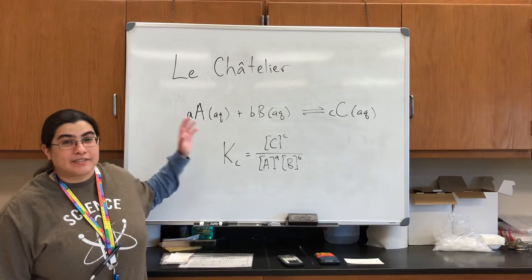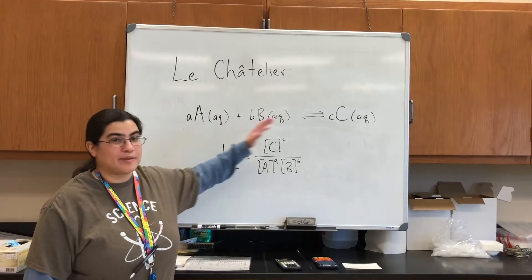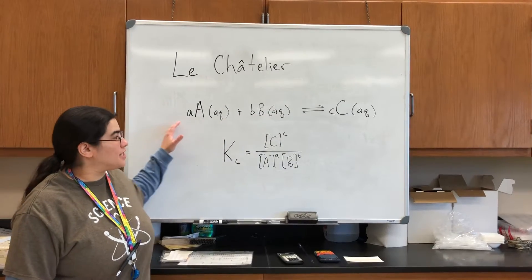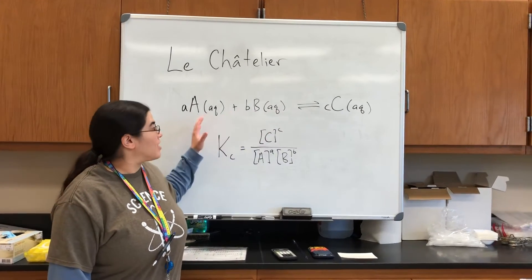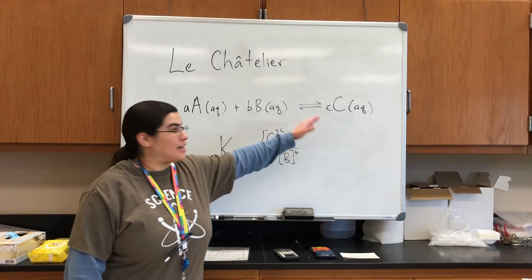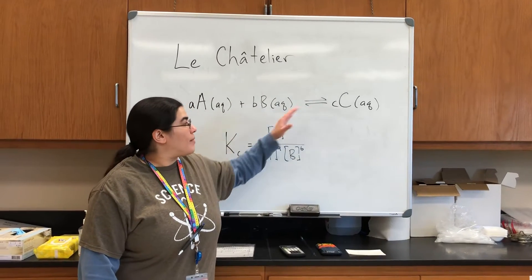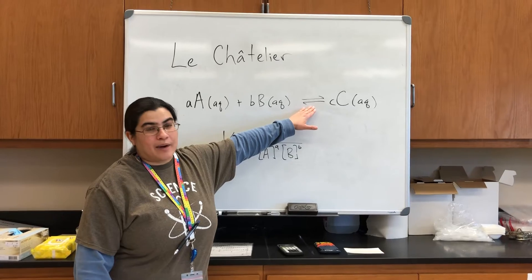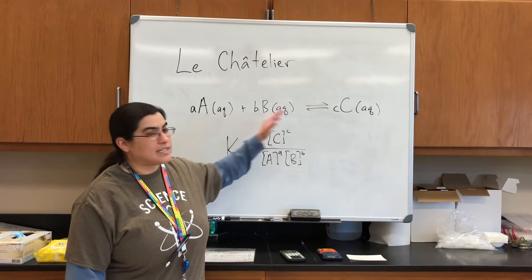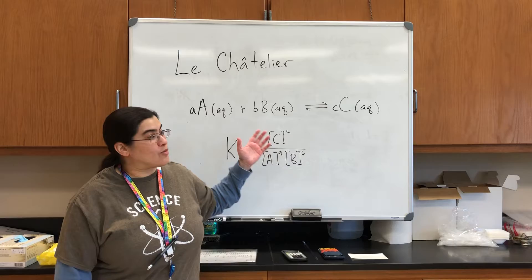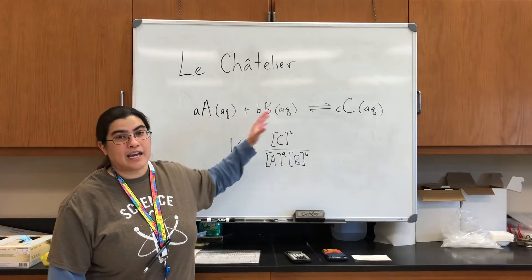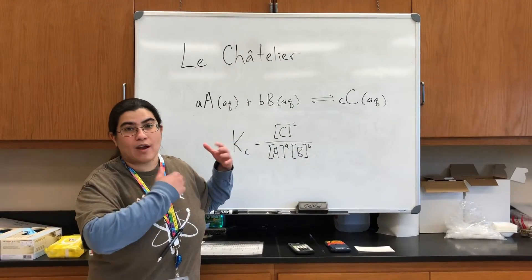And so what that principle says is that if you have a system in equilibrium, so we have our generic chemical equation here where you have your reactants A and B, your product C, and then equilibrium is indicated by this double arrow. If you have a system that's at equilibrium and you disturb the equilibrium, your system will compensate by shifting in the other direction.